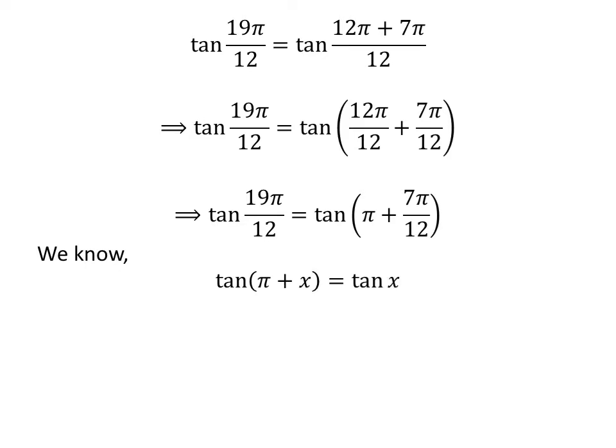We know the trigonometry identity tangent of pi plus x is equal to tangent of x. The proof of this identity is given in the video appearing in the upper right corner, and the link is also given in the description section. So tangent of 19 times pi upon 12 is equal to tangent of 7 times pi upon 12.